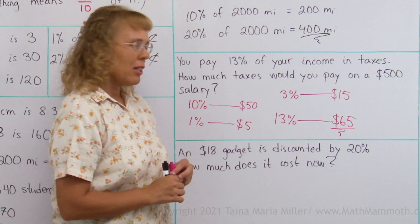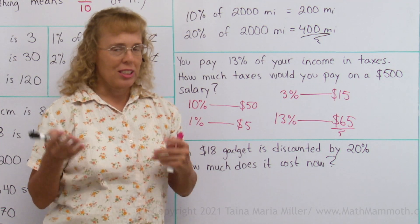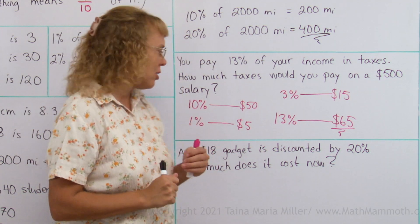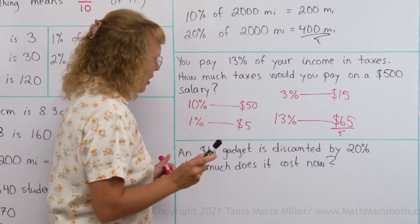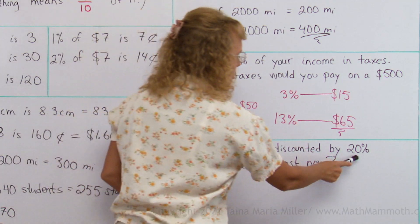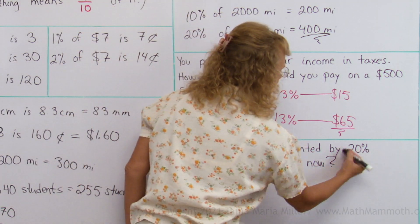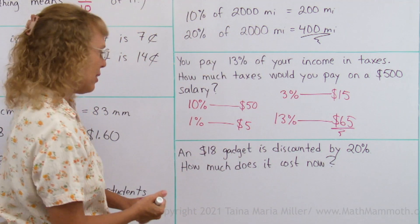Okay, we can use subtraction. When you discount an item, then you are taking off some of the price, right? You need to subtract that much. But obviously, we're not going to subtract 18 minus 20. What we need to do is calculate 20% of the price, and then subtract that.